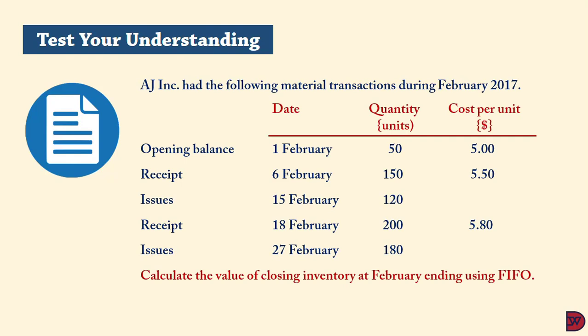Let's test our understanding. AJ Incorporated had the following material transactions during February 2017. On 1 February, opening quantity was 50 units at $5.00 per unit. On 6 February, they received 150 units at $5.50 per unit. On 15 February, there was an issue of 120 units. On 18 February, they received 200 units at $5.80, and on 27 February they issued 180 units.